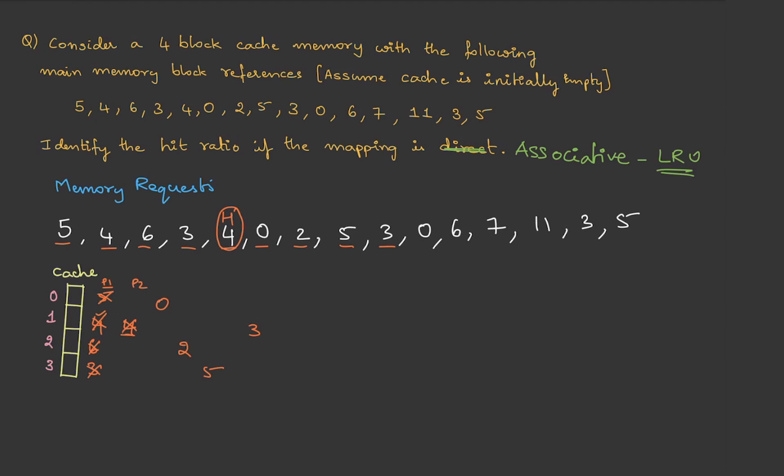Then we have 0, which is available, so this is a hit. Because it has been accessed, let me move this to the right. Then we have 6, then 7, then 11, then 3, then 5. At the end we have 3, 11, 5, and 7. These are the elements in the cache at the end of this sequence. The hit ratio is number of hits divided by atoms, so we have 2 hits, therefore 2 by 15.